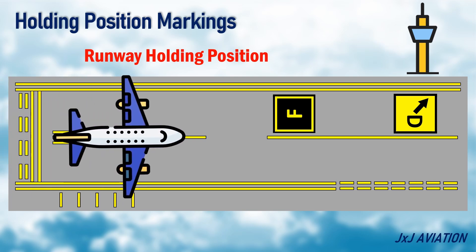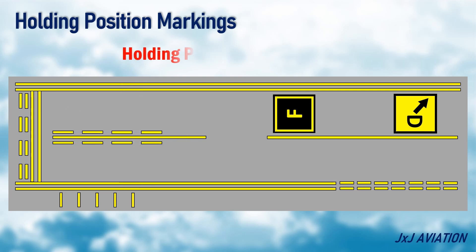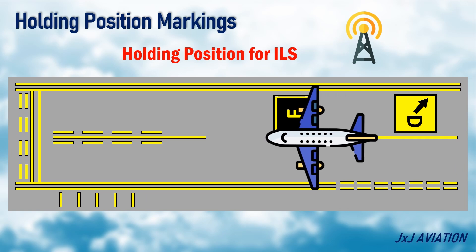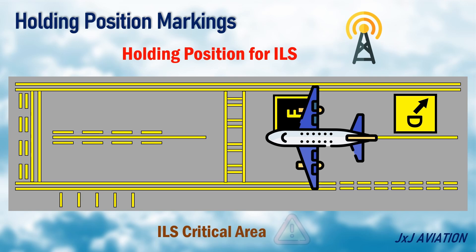When an aircraft lands, only when the entire aircraft has crossed the holding position is it considered clear of the runway. In airports where an instrument landing system is available, an ILS holding position may be marked. This is to protect the ILS critical area, which ensures there is no disturbance to the ILS signals.